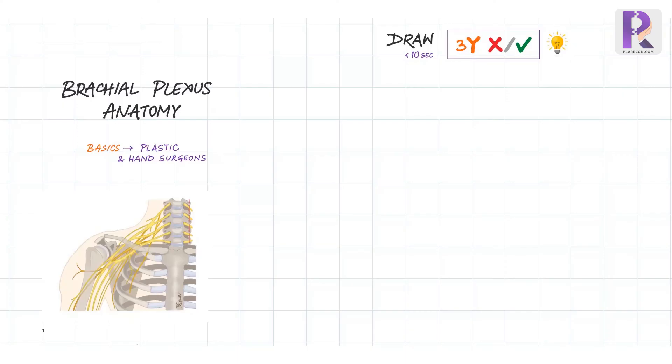Hi, this is Dev from Plaricon. Let's start off by quickly drawing a brachial plexus using the mnemonic three y's, a cross, an oblique line and a tick.